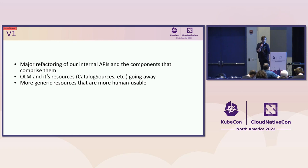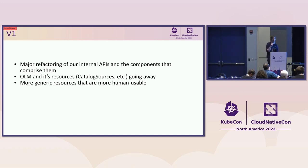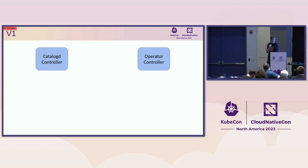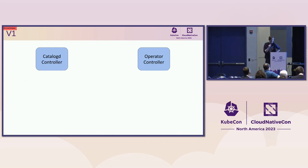OLM and its resources like catalog sources are sort of going away. The intended use case for operator developers is that you're using this by writing bundles, and those should all stay the same — you shouldn't have to worry about catalog sources unless you were using them manually. Moving forward, the new resources are intended to be more human-friendly. The two main components we're starting with are CatalogD and Operators — two new types we're introducing as controllers.